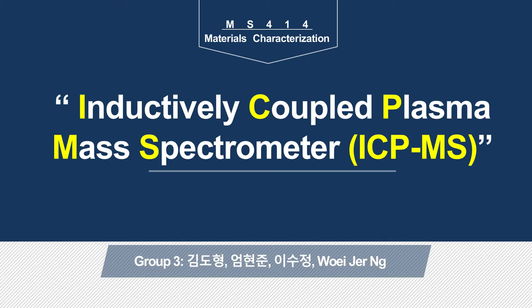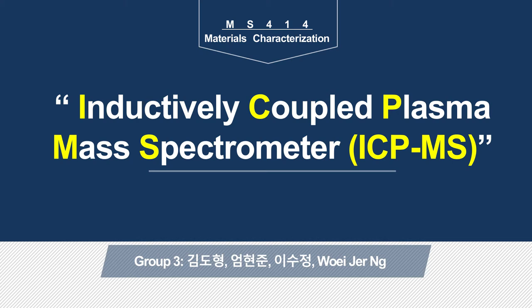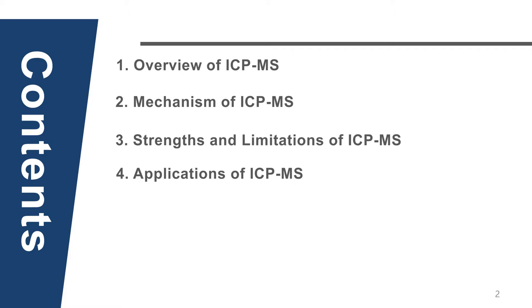Our main story today is the ICP-MS, or the inductively coupled plasma mass spectrometry. So today, we're going to give a general overview of the ICP-MS, then go into how it works, where it works and where it doesn't, and how you can use it in your research. So let's get started.